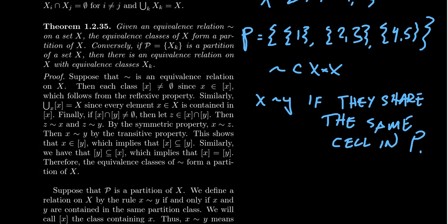That statement right there is the statement of Theorem 1.2.35. Given an equivalence relationship ~ on a set X, the equivalence classes on X form a partition in the way we just described. And conversely, if we have a partition, we can construct an equivalence relationship by saying things are equivalent if they're in the same class. So this is an if and only if statement.